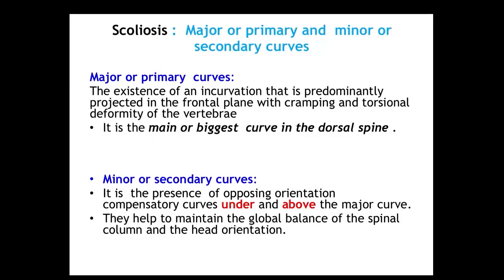We must remember that we have major or primary curves, which are the largest curves in the dorsal spine. Above or below those major curves, we find compensatory curves called minor or secondary curves. These secondary curves help maintain the global balance of the spine and head orientation so the patient can walk as normally as possible.